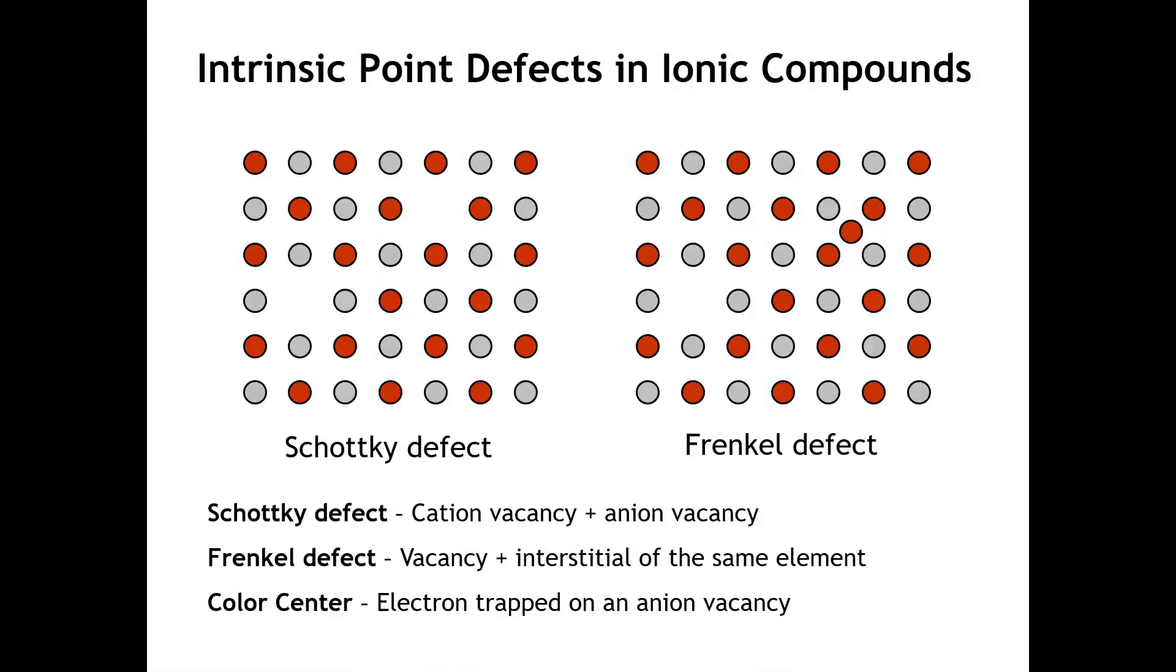Now let's talk specifically about the intrinsic point defects that we find in ionic compounds. The thing that's specific about an ionic compound is that we have ions present that have fixed charge, and we have to obey the electroneutrality principle. We still have to have charge balance. So therefore, if we have the vacancy of a cation, we have to compensate that with the vacancy of an anion. And so the two kinds of intrinsic point defects we get in ionic compounds are the Schottky defect and the Frenkel defect.